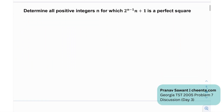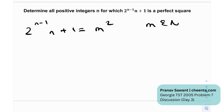So we have a very short but interesting question. We need to determine all positive integers n — natural numbers n — for which this quantity is a perfect square. So 2 raised to the power n minus 1, times n plus 1, is equal to m squared for some natural number m.